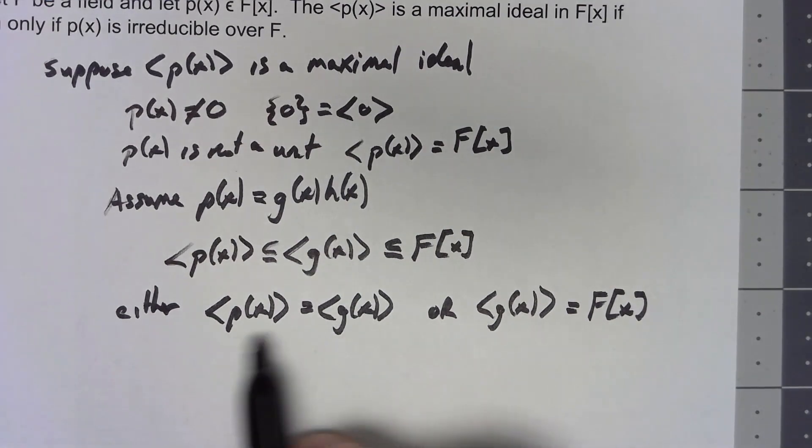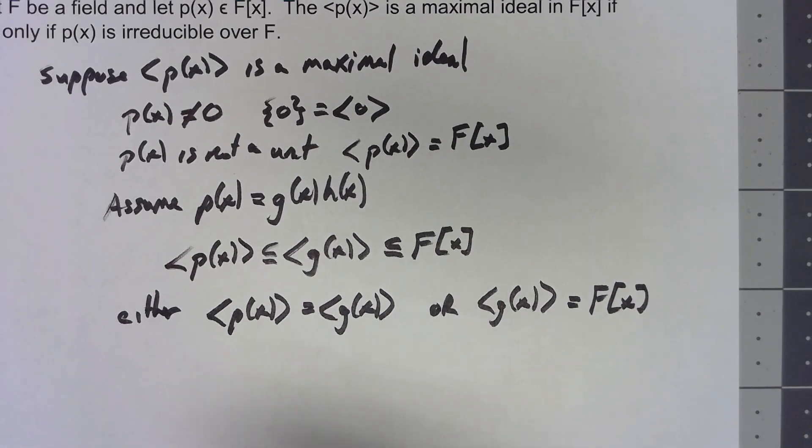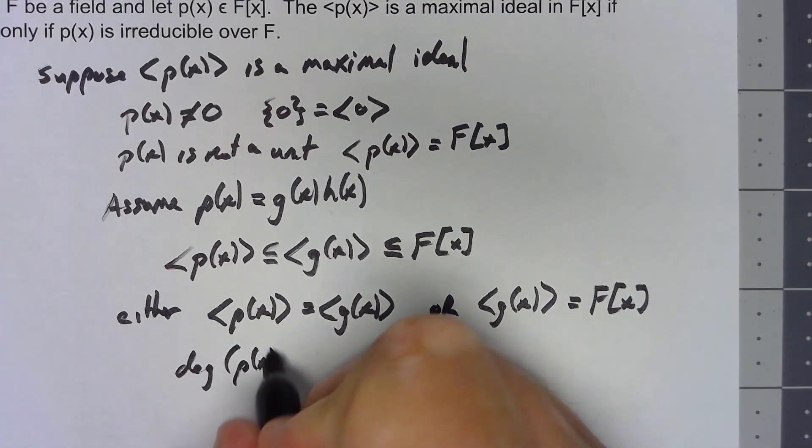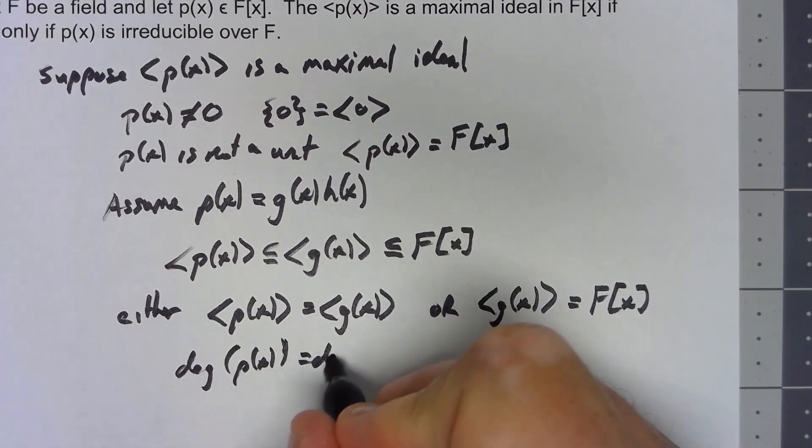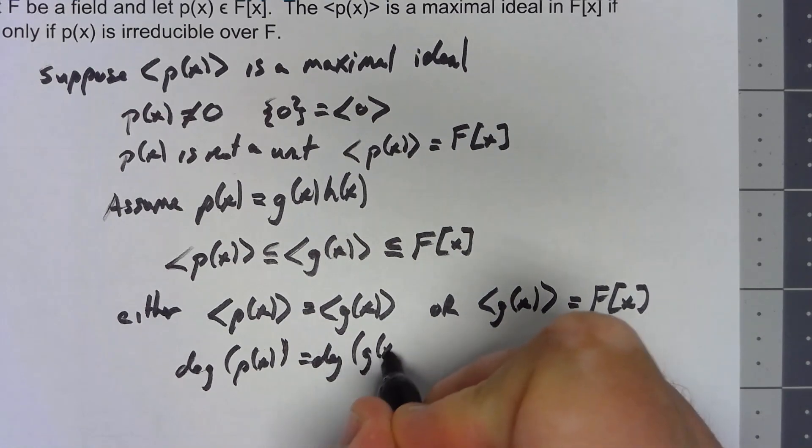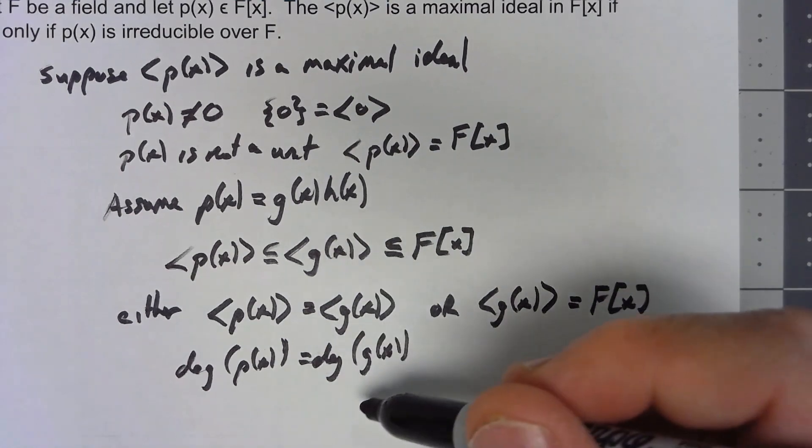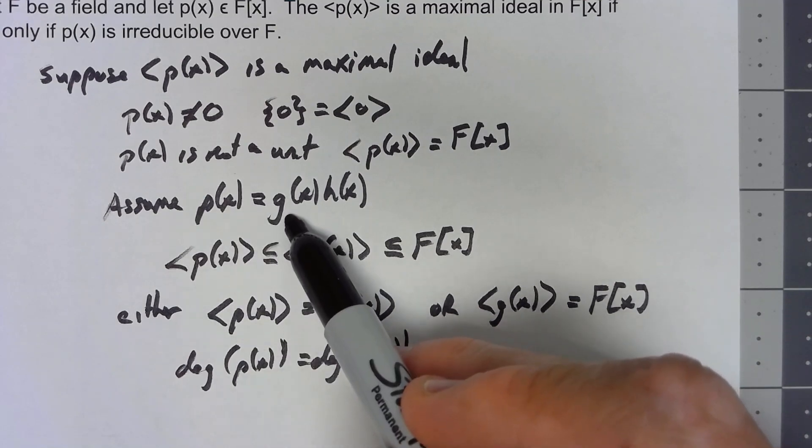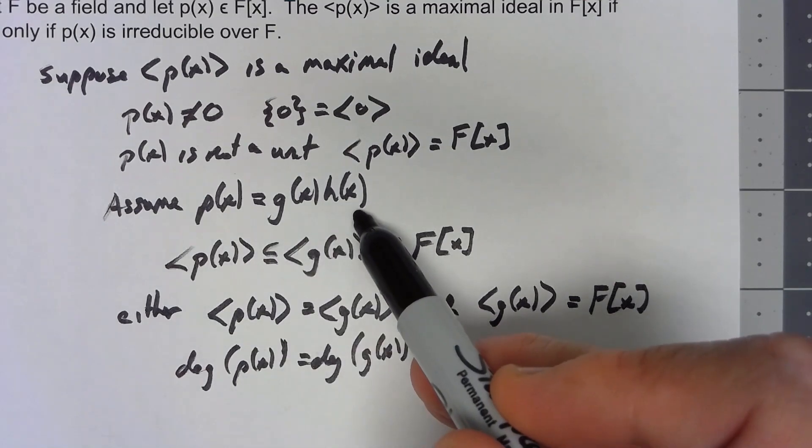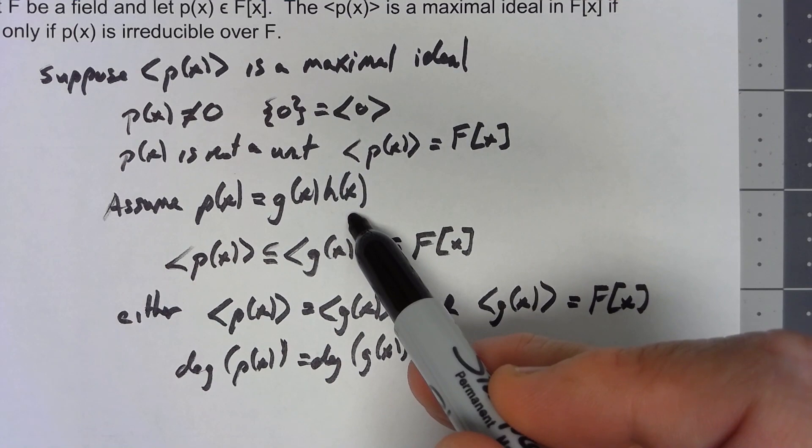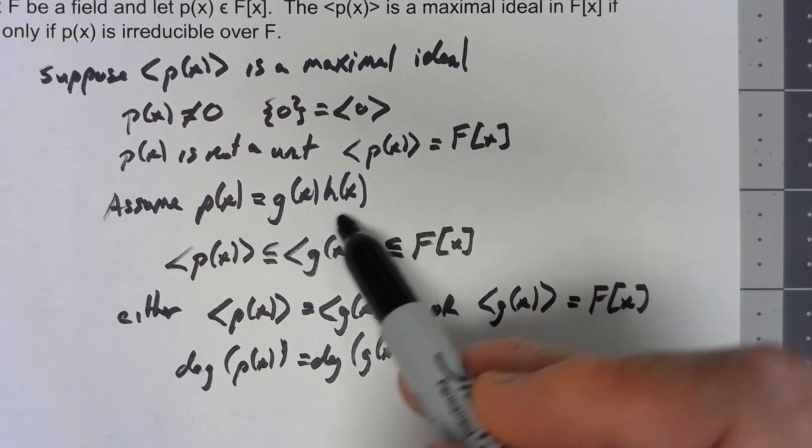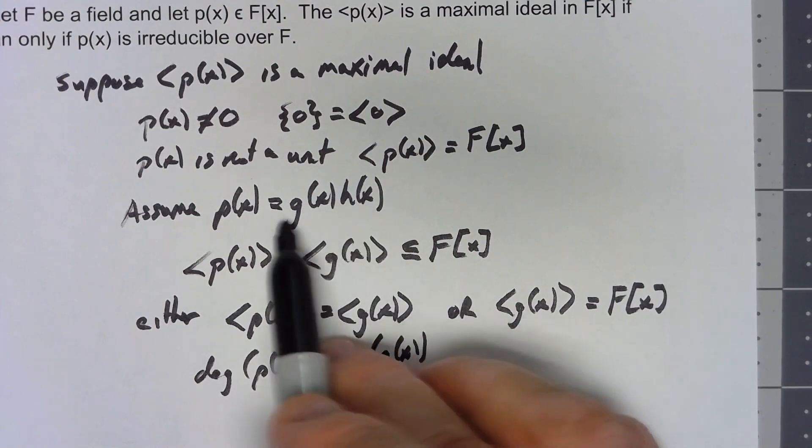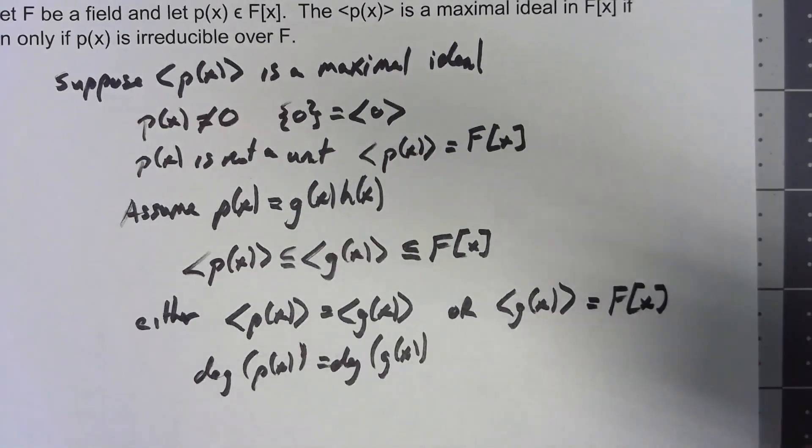p(x) is equal to g(x) or g(x) equals the whole ring. In this, we don't know that p(x) and g(x) are the same polynomial, but we do know that they have the same degree. But if that's the case, if p(x) and g(x) have the same degree, this must mean that h(x) is just a unit and so this thing isn't a proper factorization. It's a trivial factorization.